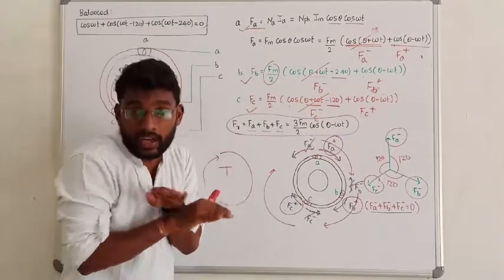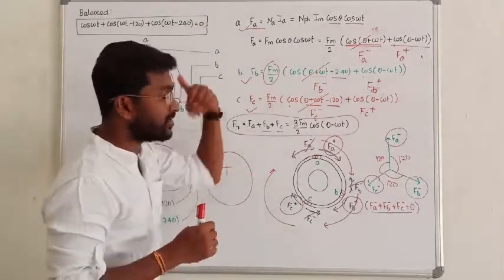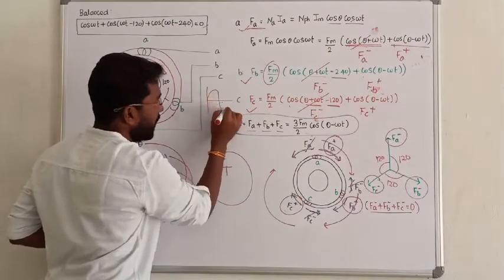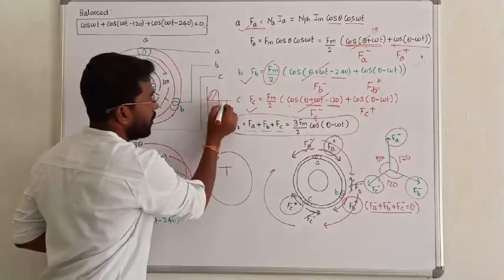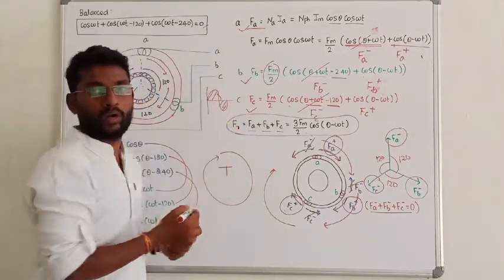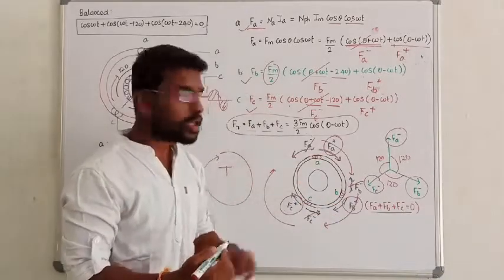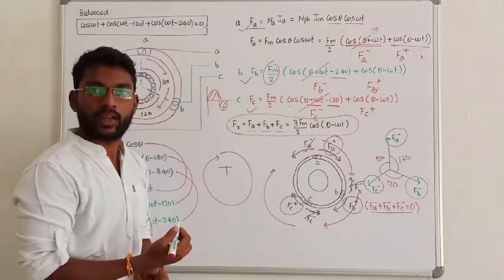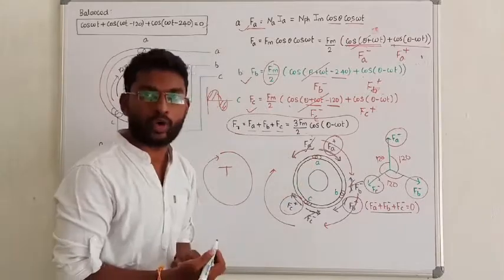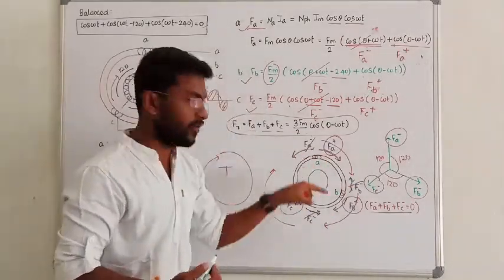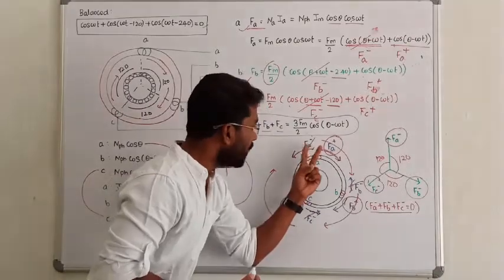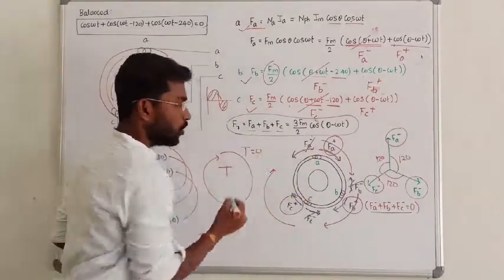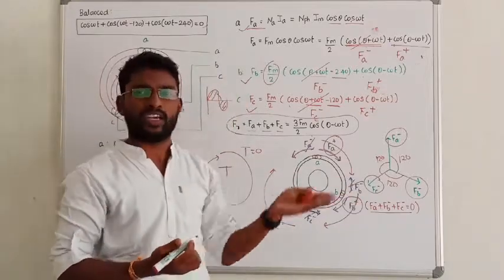So that is called the Double Revolving Field Theory. This theory applies to the single-phase induction machine. In single phase, we have only one phase. The moment we apply a sinusoidal current, we have positive torque and negative torque — the resultant is zero, so the machine will not start. In three phases, the three negative MMFs cancel each other out, and only the positive MMFs remain, producing a unidirectional torque.